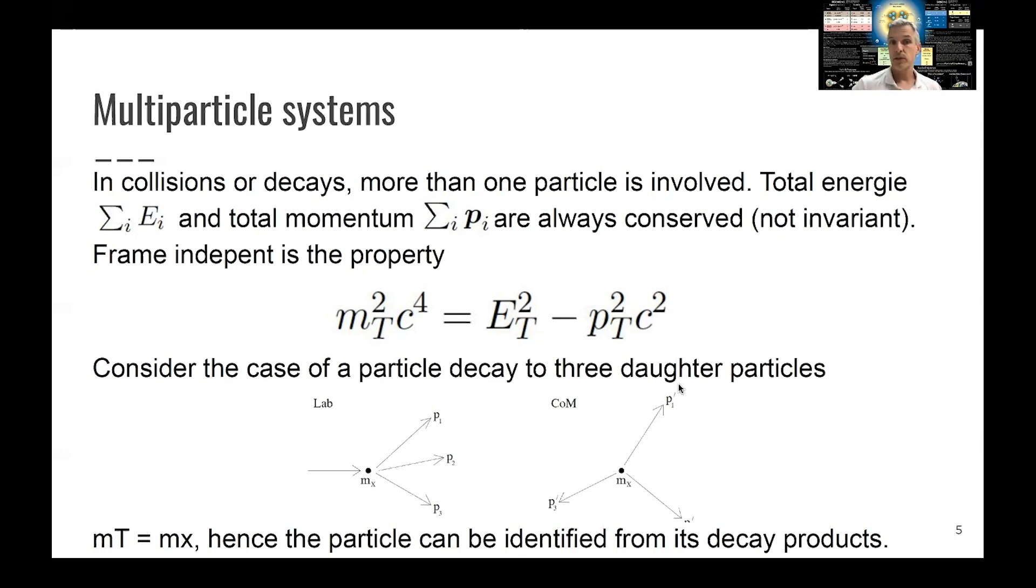So when you measure the energy and momentum of the daughter particles, you can infer in any frame the mass of the parent particle by calculating the total mass. And so you can infer from those measurements the identity of the mother particle. And that's, for example, how we discovered the Higgs boson. We measure the Higgs boson decay into a pair of photons. And then we calculate the mass of those two photons in our laboratory frame. And that mass, then, is equal to the Higgs mass.